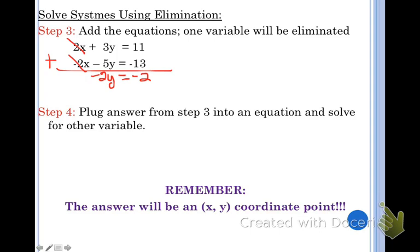So now I'm just going to solve for y. I'm going to divide both sides by negative 2, and I'm going to get y equals positive 1. So now remember, the solution to a system is an ordered pair, an x and a y value. I've already got my y value, I'm going to put 1 there.